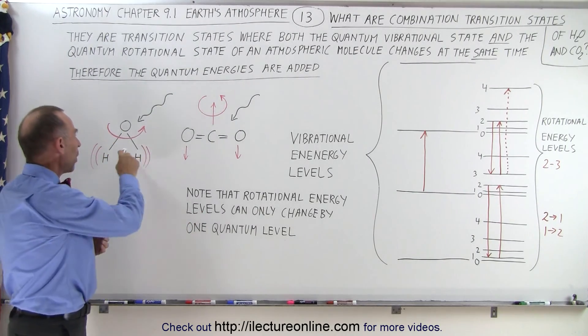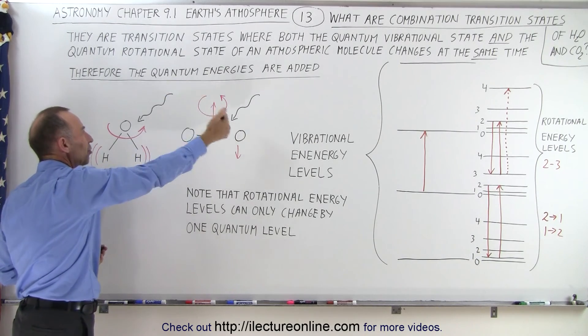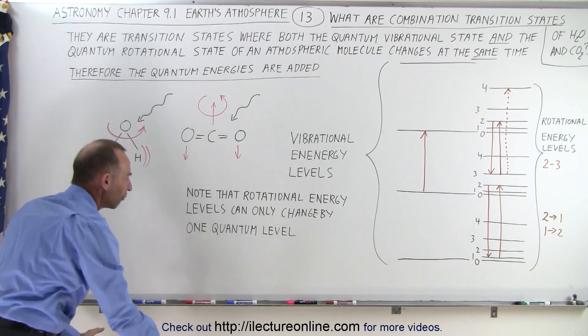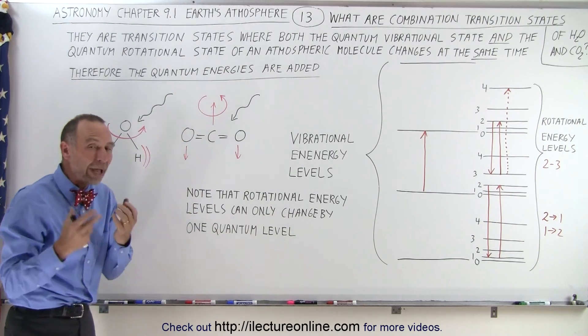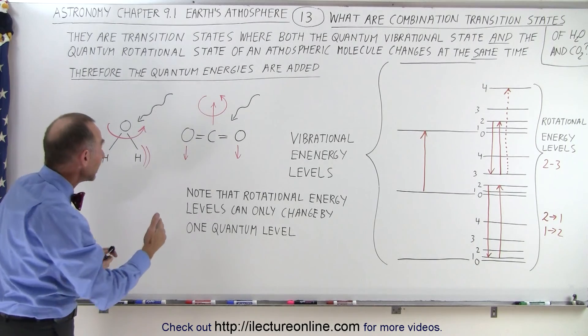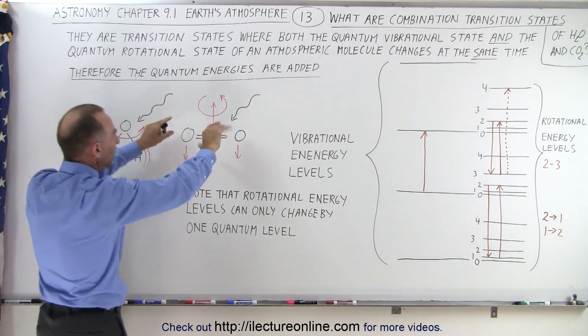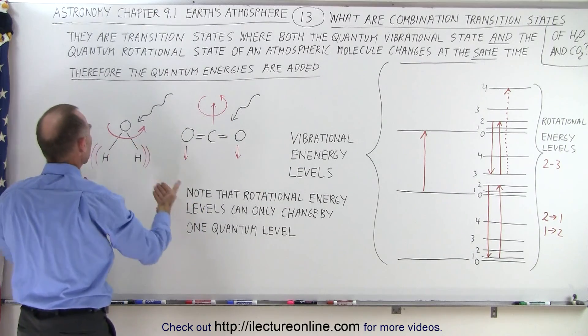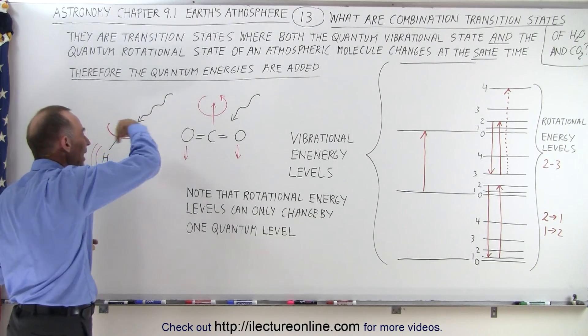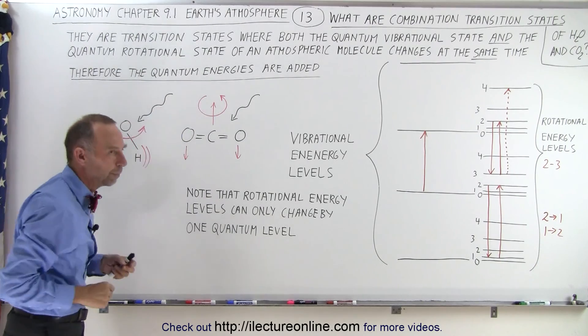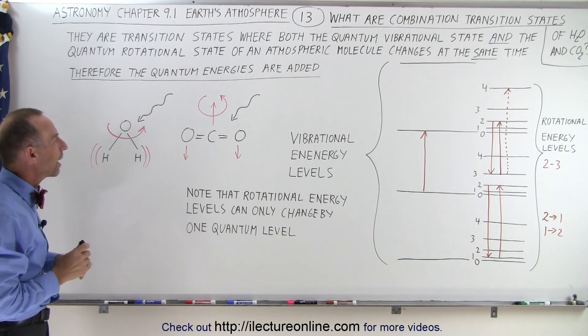It turns out when water vapor or carbon dioxide in the atmosphere receives energy either from the Sun or from the surface, they will absorb that, but the way they absorb it is that not only can we have a change in the vibrational mode, for example here we'd have the bending mode, there we have the symmetric vibrational mode, it can also at the same time change the rotational mode of the molecule, so it can change both of them at the same time.